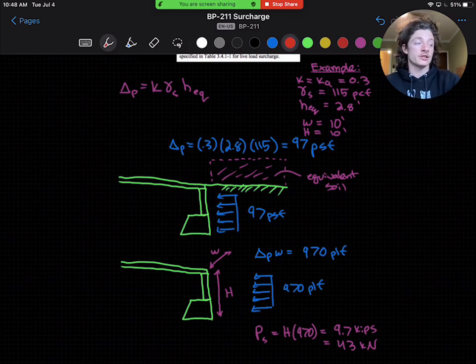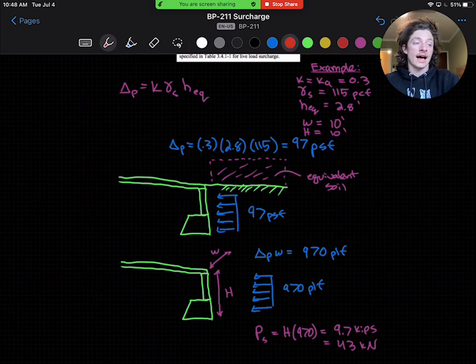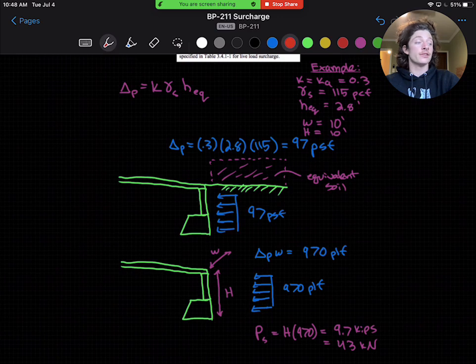We can first calculate our surcharge loading in pounds per square foot, then multiply by width to get a pounds per linear foot value along the wall. Finally, multiplying by height, we get our total surcharge load on the abutment. I've converted this to kilonewtons to give you a better context of how it fits in with our other loadings.